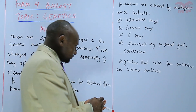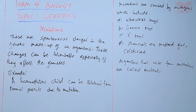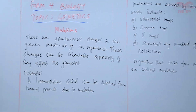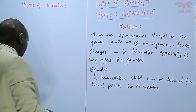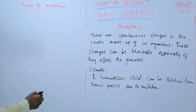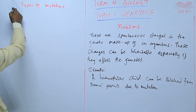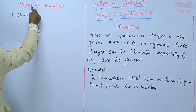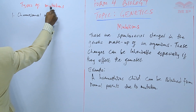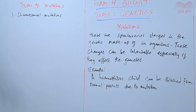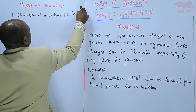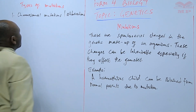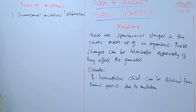Now we look at the types of mutations. We have basically two types of mutations. Number one, chromosomal mutations, also known as chromosomal aberrations.